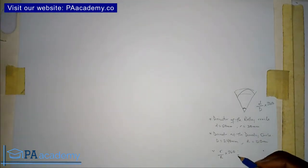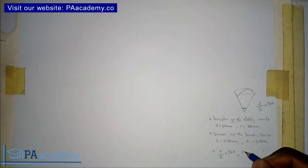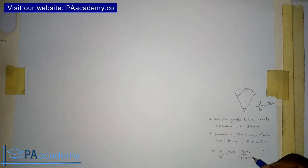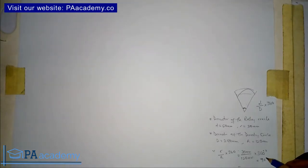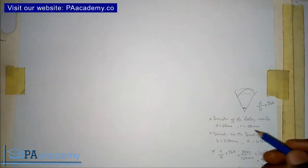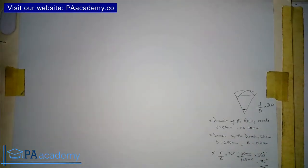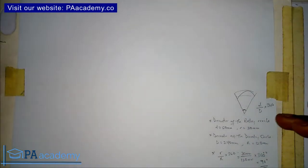Putting in our values: 30mm divided by 120mm times 360 degrees gives us 90 degrees. So these are the three values we are going to need — the two diameters are given, and you calculate the angle from those. That's what I'm going to be using in this video, so if your value is different just know that the steps are still the same.